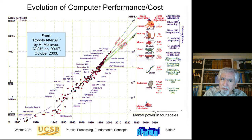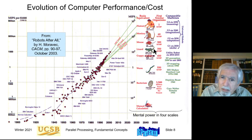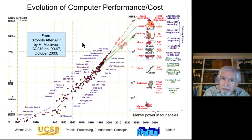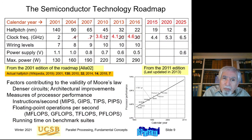This interesting slide relates processor performance growth to various levels required to emulate the brains of various animals — from very low intelligence organisms all the way up to humans. We are getting to the point where the computational capacity of the human brain can be matched by future parallel processing architectures, perhaps around 2030 or so.